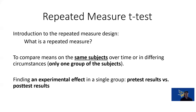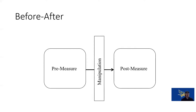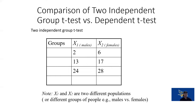Repeated measures is within the same subjects on two separate time periods. We're looking at the effect of some kind of intervention on those same participants — measure them, give them an intervention, then measure what happens next. Visually: pre-measure, then manipulation or intervention, then post-measure. For the range of motion example, foam rolling is the manipulation and the range of motion test is the post-test.